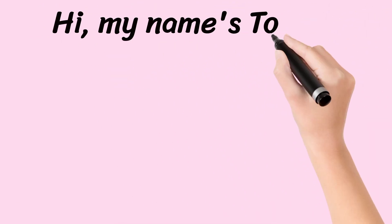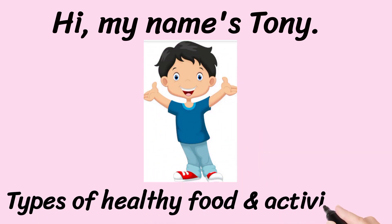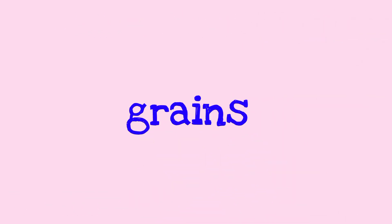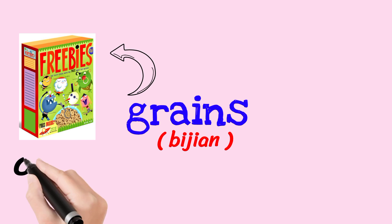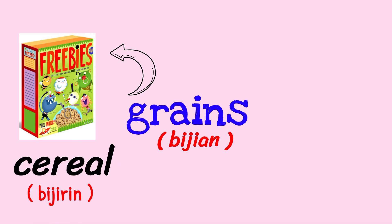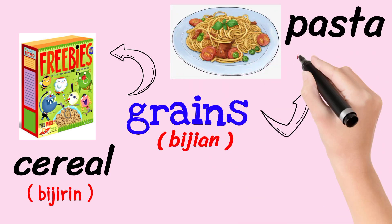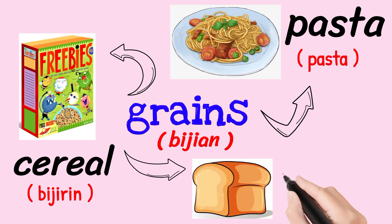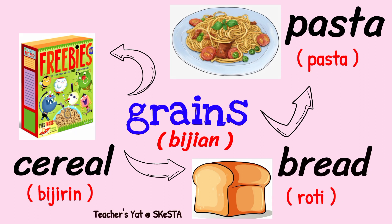Hi, my name is Tony and today I will talk about different types of healthy food and activities. The first type of food is grains — bijian. For example, cereal (bijirin), pasta, and bread (roti). Grains are made up of carbohydrates, which is important in our daily diet.